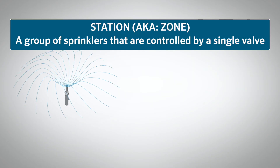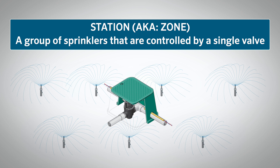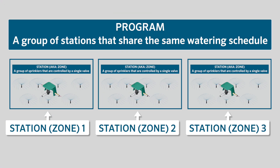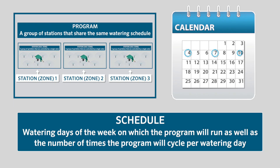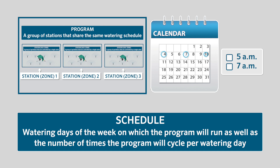Now that we have programmed our current date and time, we are ready to set our watering schedules. Let's review terminology. A station is a group of sprinklers that are controlled by a single valve, also known as a zone. A program is a group of stations that share the same watering schedule — meaning watering days of the week on which the program will run, as well as the number of times the program will cycle per watering day.